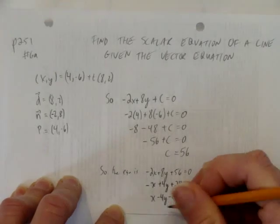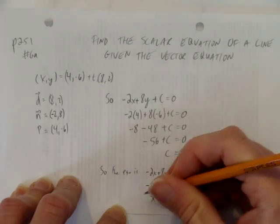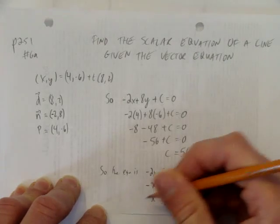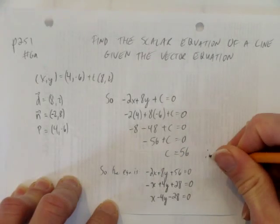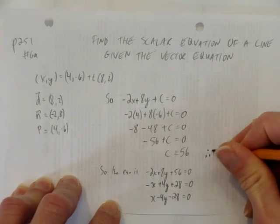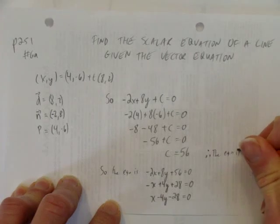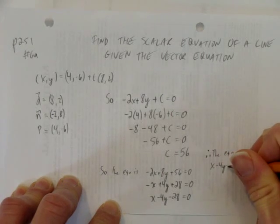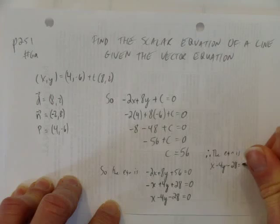And we get x minus 4y minus 28 equals 0. Now, we've got our equation. So, we should probably write a therefore. That wasn't a really good therefore. So, we'll be done now for sure. Therefore, the equation is x minus 4y minus 28 equals 0.